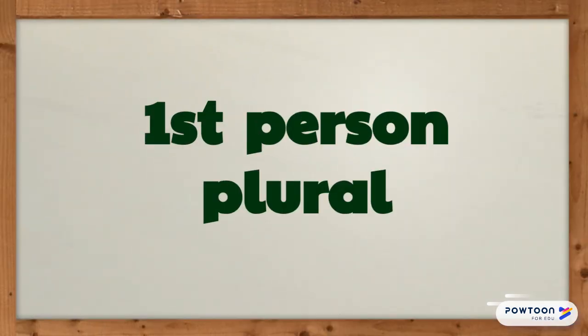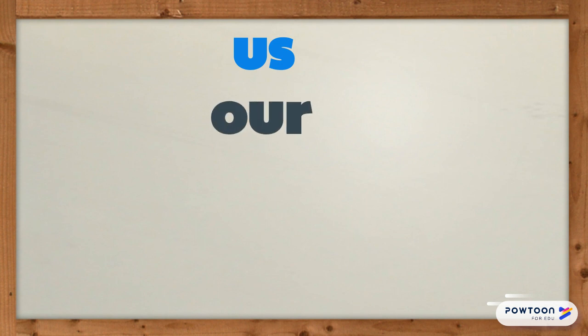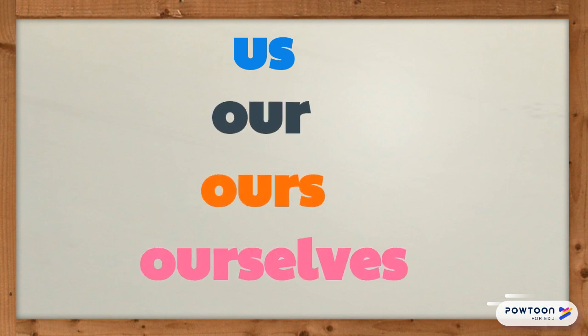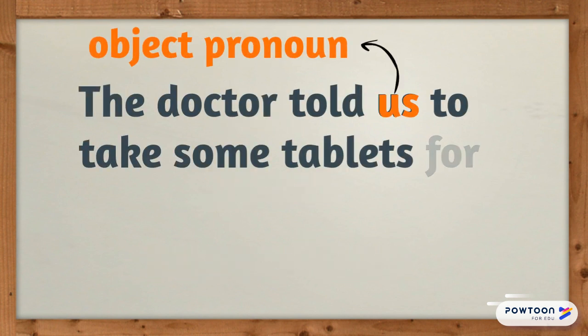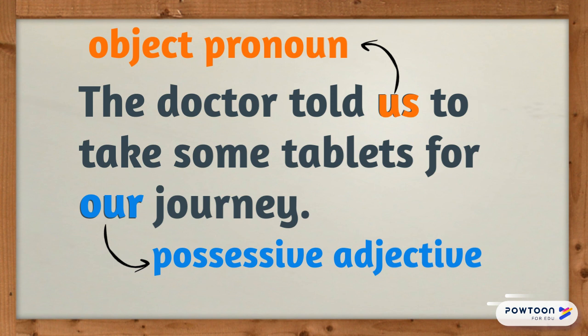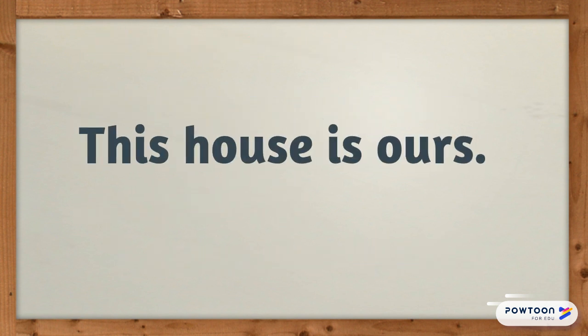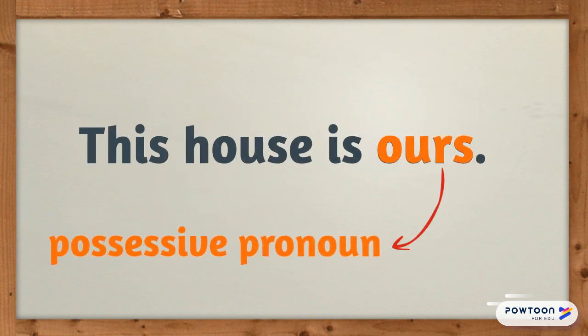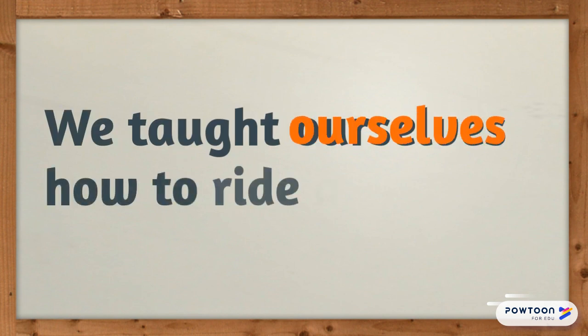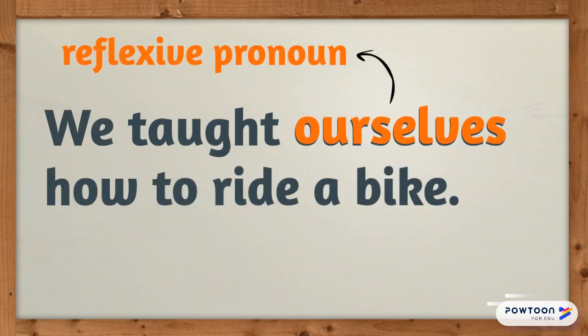Let's look at the first person in the plural: us, our, ours, ourselves. 'The doctor told us to take some tablets for our journey.' 'This house is ours.' 'We taught ourselves how to ride a bike.' Notice how the reflexive pronoun changes at the end in the plural form.